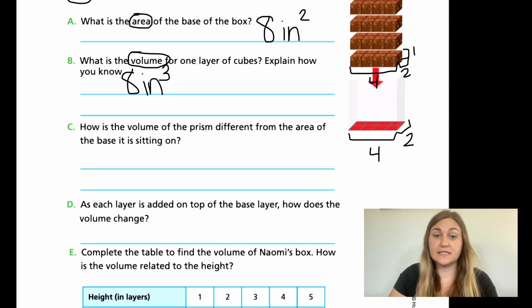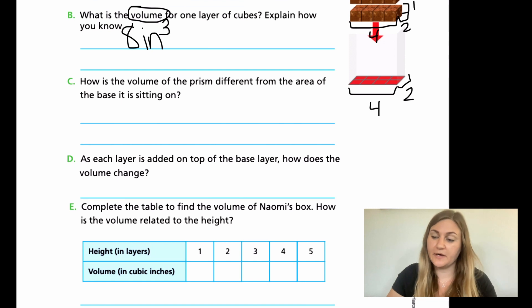Now let's jump ahead to C and D and see what those questions are talking about. In C, it says, how is the volume of the prism different from the area of the base it is sitting on? And D, as each layer is added on top of the base layer, how does the volume change? I just want you to do C and D for right now. Go ahead and hit pause here.